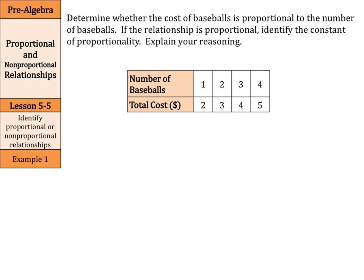Here's what we're going to do. We're going to look at the ratios here with the total cost and the number of baseballs. Our first ratio here is 2 over 1, then we have 3 over 2 and 4 over 3 and 5 over 4. Remember, when you think about slope, we have our x and our y and it's always y over x. So, we're going to write our total cost over the number of baseballs.